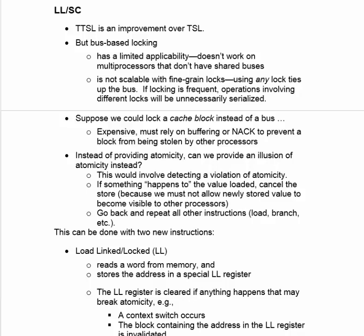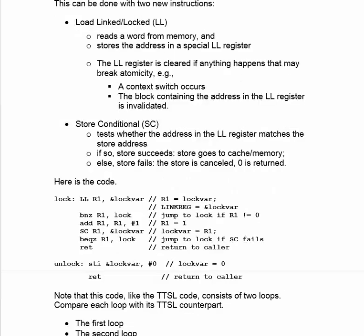Upon a read reference, we load a word into the cache and then monitor that location. If it happens to get overwritten before we're done with it, we cancel the pending store and make the process that read the word go back and re-execute the code, beginning with the read of the word that was just overwritten. To do this, we need two new instructions. The first is called Load-Linked, or LL. It reads a word from memory and stores the address of that word in a special LL register. That register is cleared if anything happens that may break atomicity — for example, if a context switch occurs, or if the block containing the address in the LL register is invalidated, we clear the LL register, meaning we ultimately have to go back and re-execute the load.